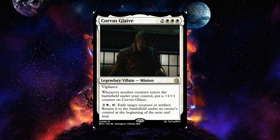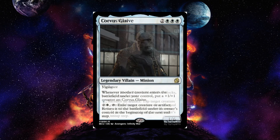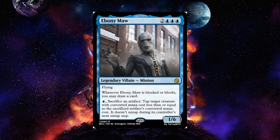Corvus Glaive is a five-cost white legendary villain minion with vigilance. Whenever another creature enters the battlefield under your control, put a +1/+1 counter on Corvus Glaive. You can pay two and a white to exile target creature or artifact and return it to the battlefield under its owner's control at the next end step. He's part of a cycle with the rest of the Black Order. Ebony Maw is two blue-blue-blue, a legendary villain minion 1-6 with flying; whenever he's blocked or blocks, you may draw a card. You can pay one blue and sacrifice an artifact to tap target creature with converted mana cost less than or equal to the sacrificed artifact — it doesn't untap during its controller's next untap step. Ebony Maw is a big thinker, a telepath, and blue makes a lot of sense for him.